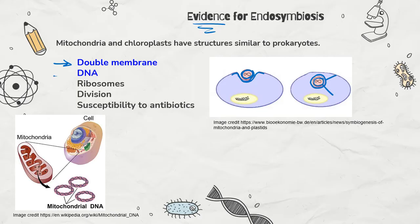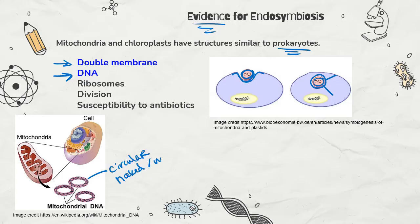Mitochondria and chloroplasts also have their own DNA. What's super cool is that DNA is more similar to prokaryotic DNA than to the eukaryotic DNA we have in our nuclei. Mitochondrial and chloroplast DNA is circular, not linear — we have linear DNA in our nucleus. Circular DNA is found in bacteria and also in our mitochondria. Additionally, it is naked DNA — it has no histones.